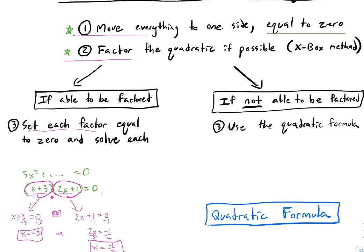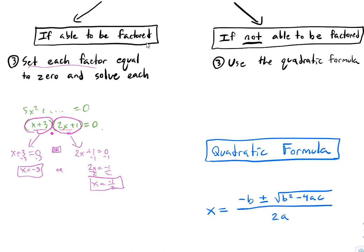Now we have a backup. Let's say we put everything onto one side and try to factor it, but we can't — maybe you forgot how to factor, or maybe it's just not possible. It's possible to have a prime expression, just like 37 is prime. 36 can be factored, 38 can be factored, but 37 is prime. If you try to factor it and can't, we have a backup: just plug it into the quadratic formula.